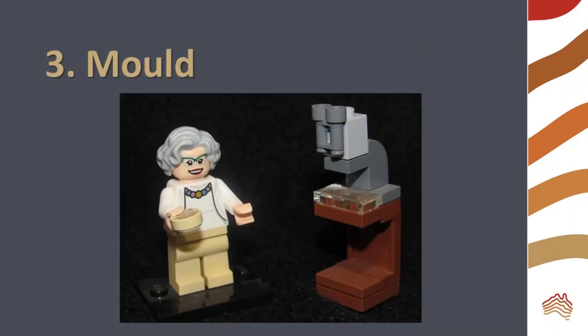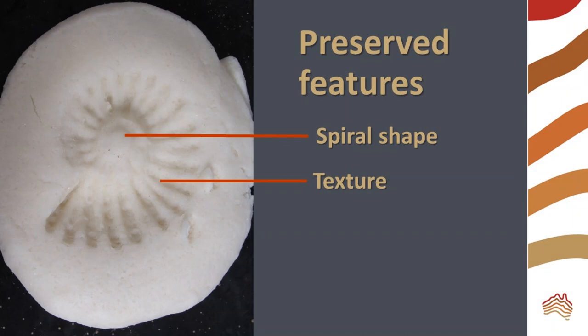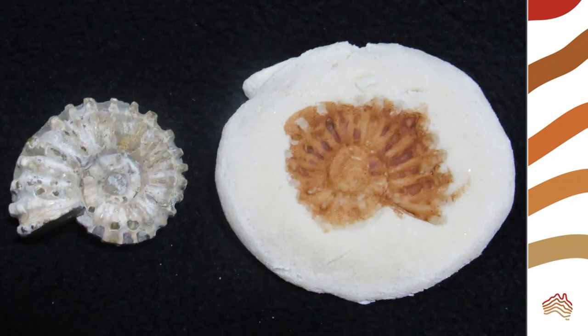Finally, we will look at molds. The body segments of this trilobite have been preserved, and we can also see the smooth texture of the segments. In our ammonite mold, the spiral shape is clearly preserved. We can also see the ridged texture of the shell. Although they preserve some features, molds don't show us everything about the whole organism.